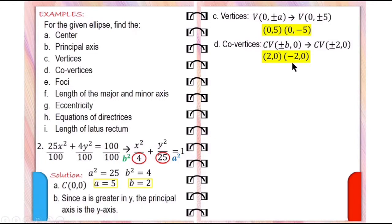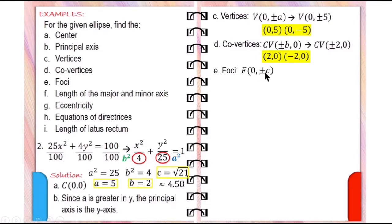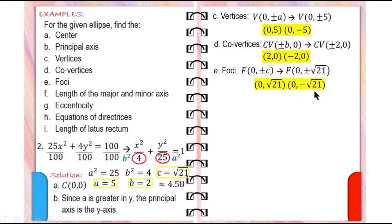To find the foci, first solve for C. A squared is 25 and B squared is 4. The square root of 25 minus 4 is the square root of 21. So C is equal to the square root of 21, or approximately 4.58 in decimal. The foci are (0, ±√21), which are (0, √21) and (0, -√21).